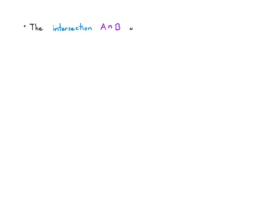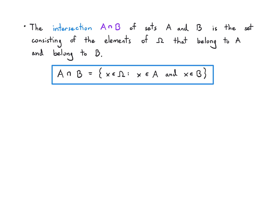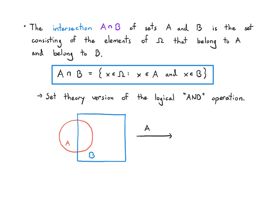The intersection of A and B, written with a backwards U symbol, is the set that consists of elements of the universal set that belong to both A and B. In set builder notation: X is an element of A and X is also an element of B. The set theory version of this is a logical AND, and we can visualize this as just the overlapping region in the Venn diagram.